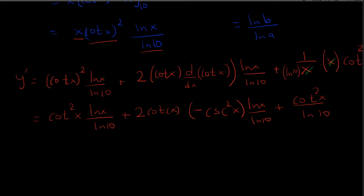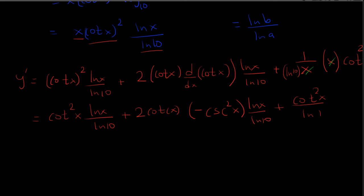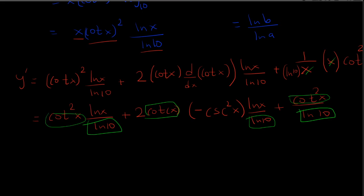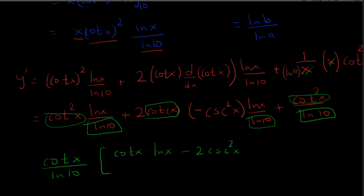Now we simplify by factoring out common terms. We have a factor of ln(10) in the denominator throughout, and a factor of cotangent(x). Pulling out cotangent(x)/ln(10), we're left with one more factor of cotangent(x) times ln(x), minus 2·csc²(x)·ln(x), plus another factor of cotangent(x). That gives us our derivative.